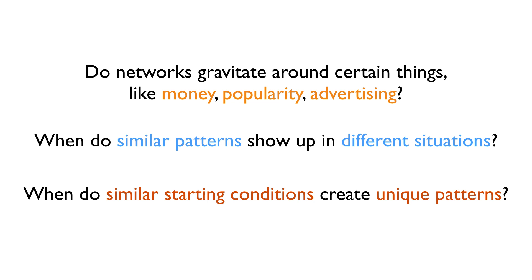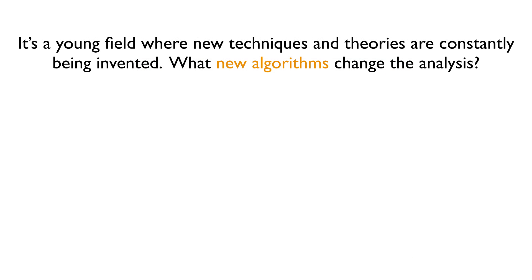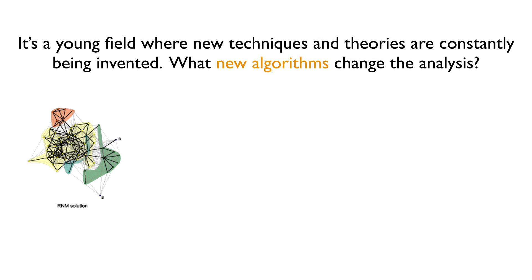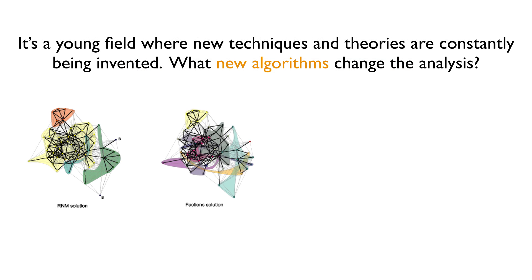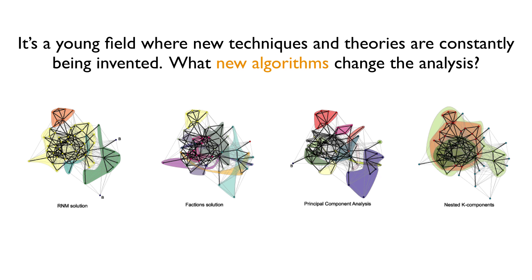Social network analysis is a very open field, and there are lots of technical options to try out, like adding geographic mapping data to understand how physical environments change network dynamics. And for math geeks, it's still a very new field with lots of room for creating new analytical algorithms that can create new forms of mapping network connections.